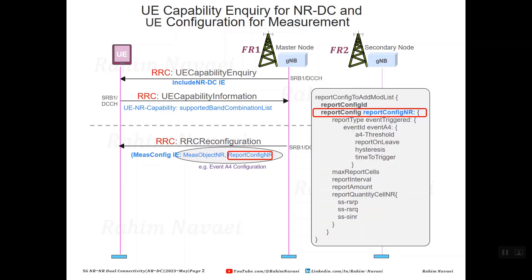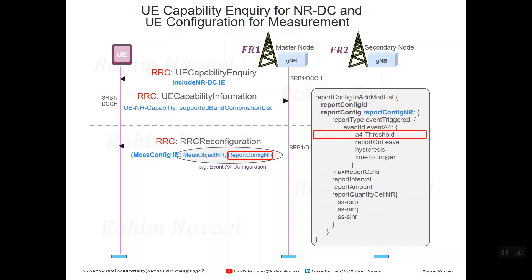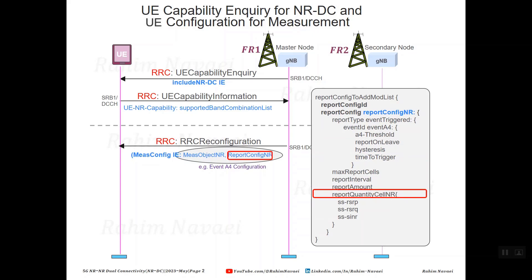The gNB also includes a report configuration for New Radio in the RRC reconfiguration message to specify the criteria for triggering the event — for instance, the type of event, which here is event A4, threshold, time to trigger, and report quantity, which are the NR cell measurement quantities such as RSRP, RSRQ, and SINR that should be included in the measurement report by the device.